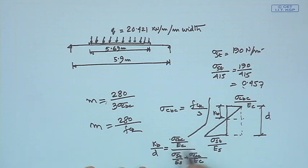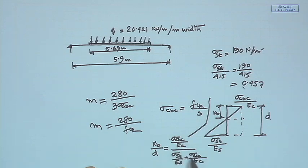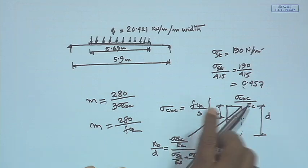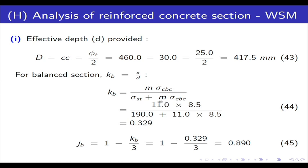Using m = 280 / (3 × sigma CBC), kB depends on sigma ST and the result is kB = 0.329. Then jB = 1 − kB/3 = 1 − 0.329/3 ≈ 0.89.